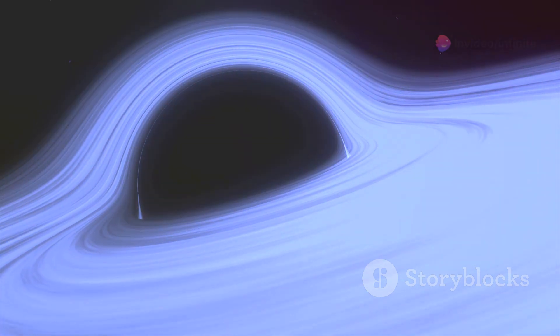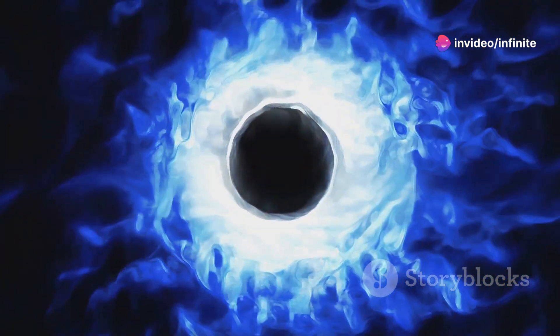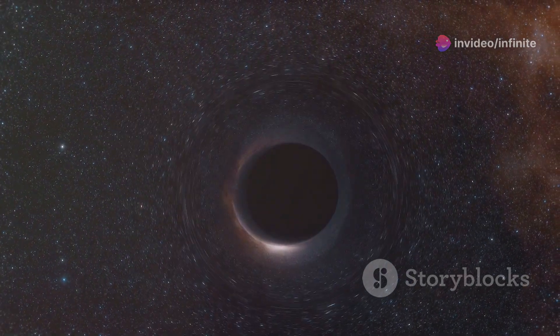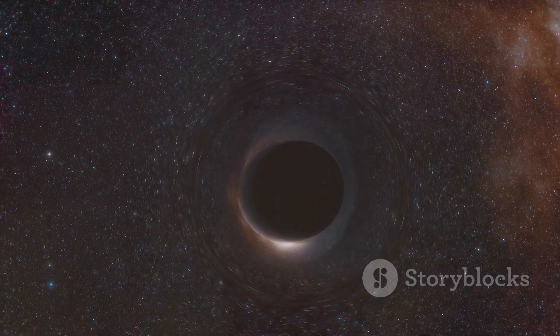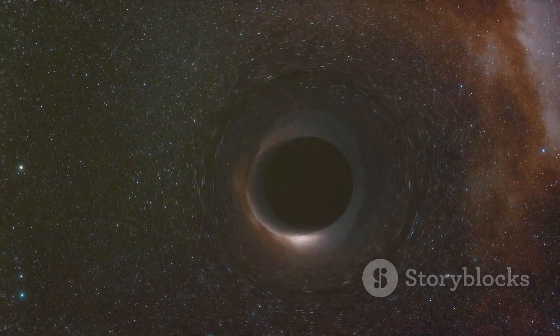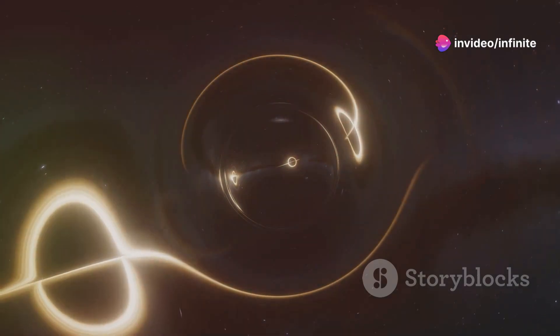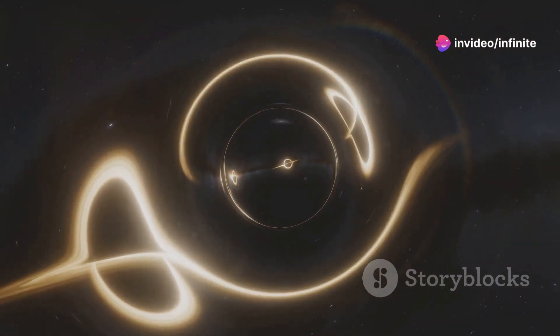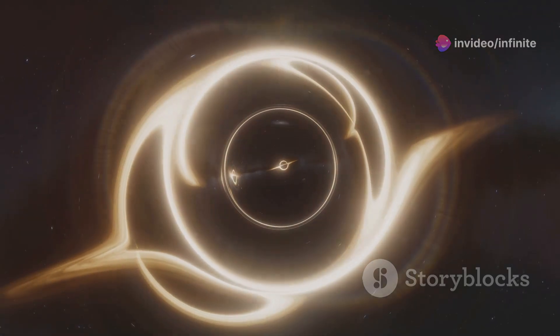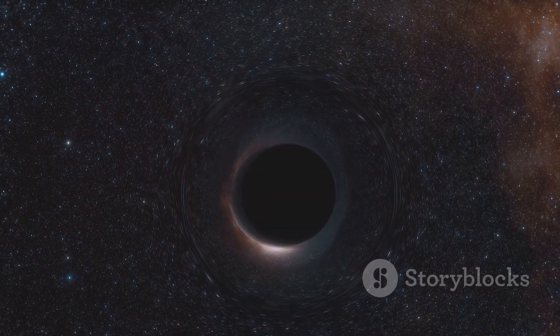How do these cosmic monsters form? The process is as dramatic as the black holes themselves. When massive stars die, they collapse under their own gravity, squeezing their matter into an incredibly small space. This collapse is so intense that it overcomes all other forces, leading to the creation of a black hole. This creates a region of infinite density known as a singularity, the heart of a black hole. The singularity is a point where our current understanding of physics breaks down.